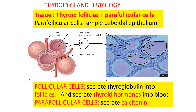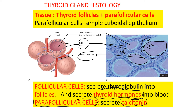In between follicles, another population of cells called parafollicular cells secrete a second type of hormone called calcitonin. So the thyroid gland secretes two sets of hormones: thyroid hormones secreted by follicular cells which surround the follicle, and calcitonin secreted by parafollicular cells located in between follicles.